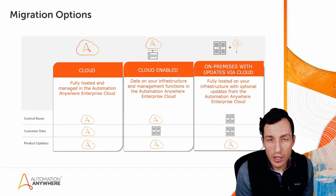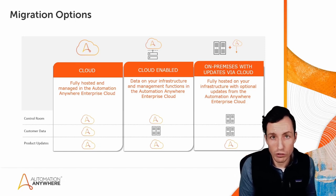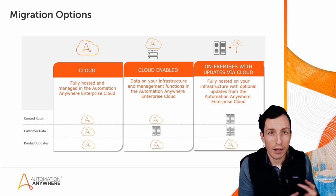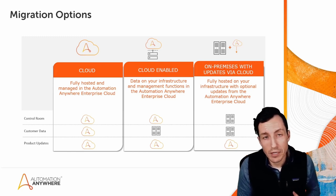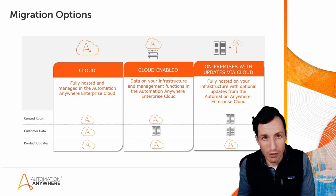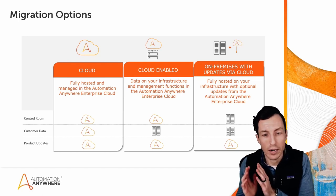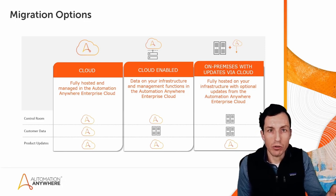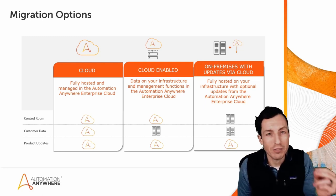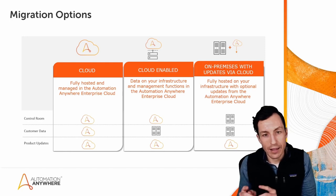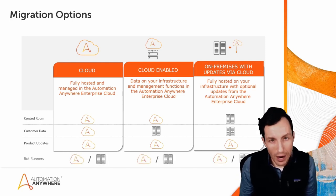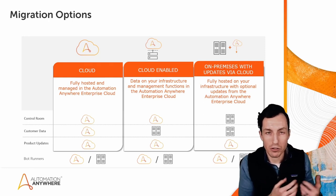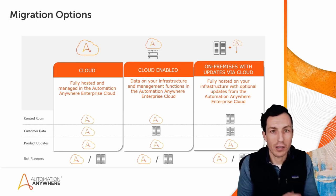On the far right column we have the on-prem option. In this case your control room is hosted in your own environment, your database is hosted in your own environment, and product updates are distributed through cloud as an MSI that you apply to update your control room. One thing missing from this table is where your bot runners live — I've talked to many people who say they can't do cloud because their bot runners are on-prem.